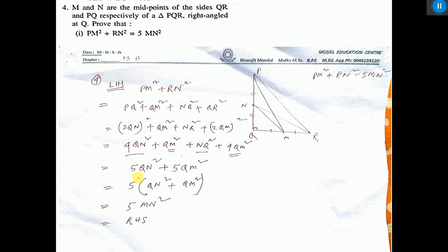Now see PQ. PQ means 2 into QN because N is the midpoint, that put. And here QR, this total, that is equal to 2QM we can write. Because M is the midpoint. So 2QM whole square.